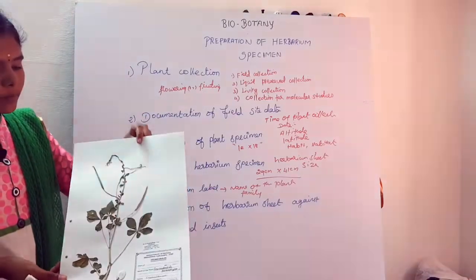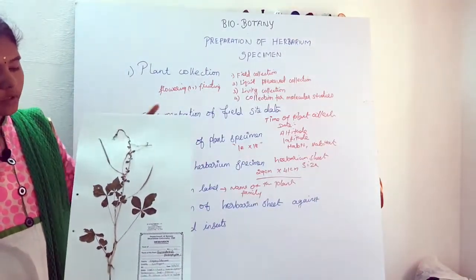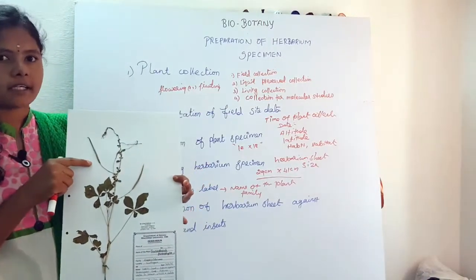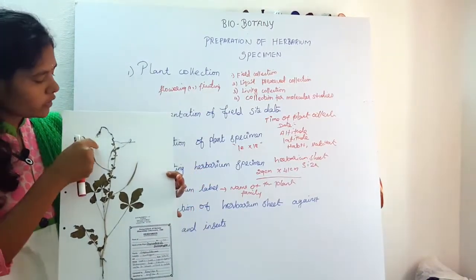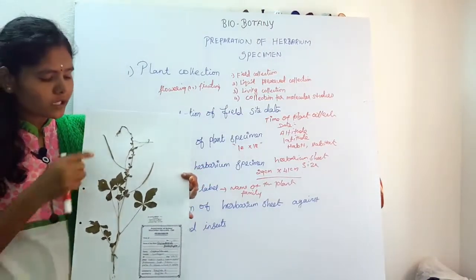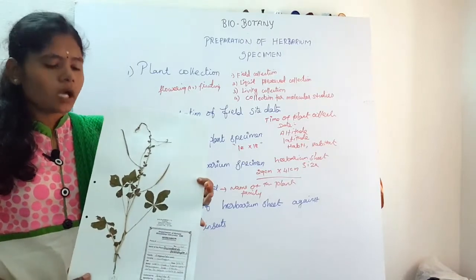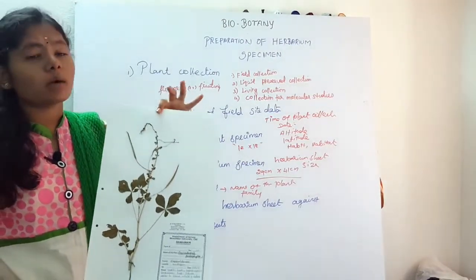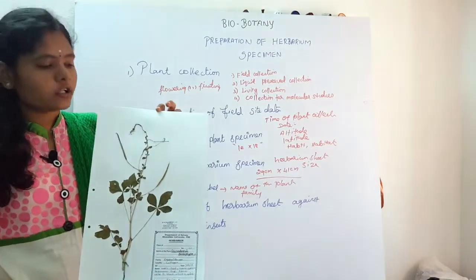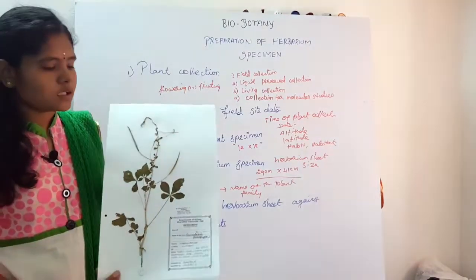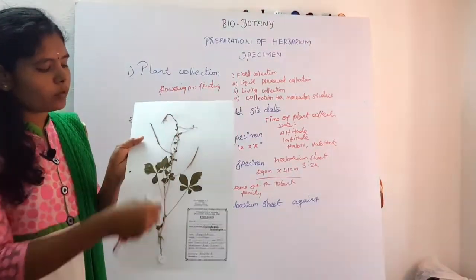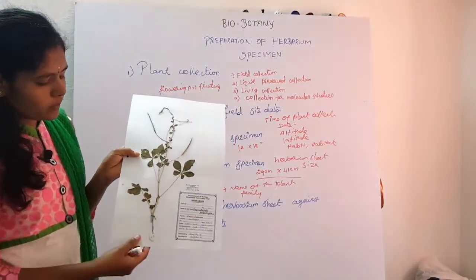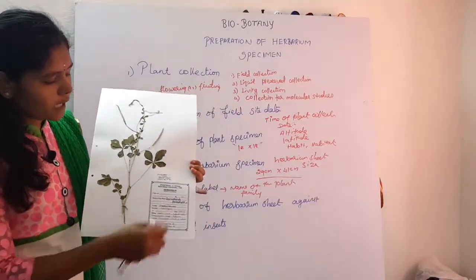This is the herbarium. Here you can see the leaves, with fruiting and flowering. There are two fruits and flowers. You take the plant with both fruits and flowering — whatever is present. This is the reproductive part of the plant. The leaves are stuck with glue onto the herbarium sheet.